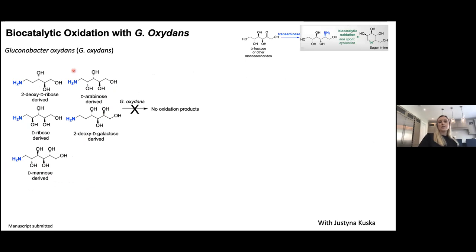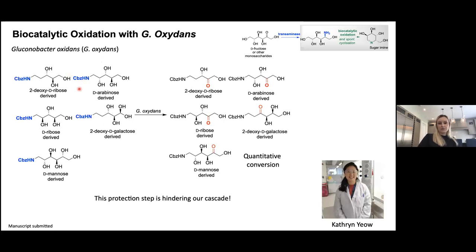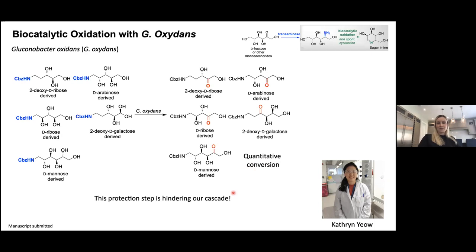When we tried our amino alcohols with G. oxidans, we didn't see any oxidation products. We needed to protect them — once we added a Cbz protecting group, we got quantitative conversion, so the organism did a really good job. Galactose oxidase also seems to require protected amino alcohols. But this protecting group step is ruining our idea of a nice cascade, since enzyme cascades are supposed to avoid protecting group manipulations. I've tasked Catherine with solving that issue so we can develop a true cascade.